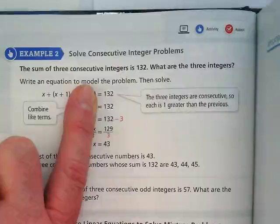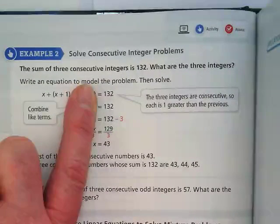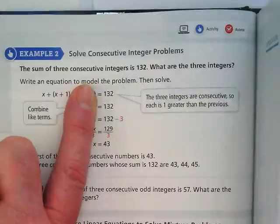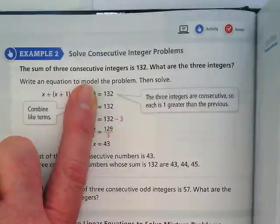21, 22, 23 are consecutive. They're like on the number line right behind each other. 1, 2, 3 is consecutive. Is 1, 2, 3 going to equal 132? No.